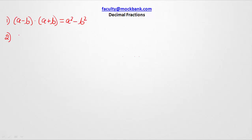The second rule that we have learned is (a - b) whole square. This is a² - 2ab + b².